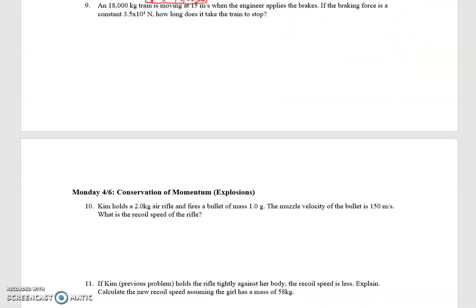Now we're actually at the last problem. An 18,000 kg train is moving at 15 m/s when the engineer applies the brakes. If the braking force is a constant 3.5 times 10 to the 4th, or 35,000 newtons, how long does it take the train to stop? So the force is 3.5 times 10 to the 4th, it's going to be the opposite direction of the train's motion because it's brakes. T is what we're solving for. Mass is 18,000 kg. Final velocity is zero because it's coming to a stop. Initial velocity is 15. Distribute the 18,000, divide by 3.5 times 10 to the 4th, and you get 7.7 seconds.